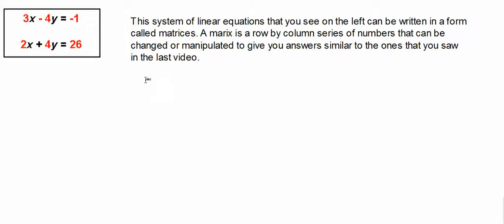So basically we're looking at right now 3x minus 4y equals negative 1, and 2x plus 4y equals 26. We're looking at that as a system of linear equations.